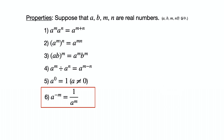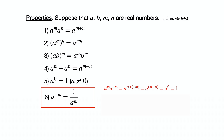Property 6: a to the negative m power is equal to 1 over a to the m power. Using property 1 again and substituting n with negative m, we get a to the m power times a to the negative m power equals a to the m plus negative m power, which is a to the 0 power, which is 1. So a to the negative m must be 1 over a to the m.